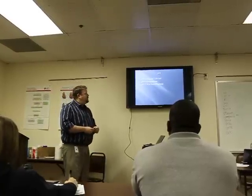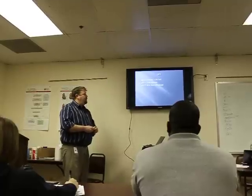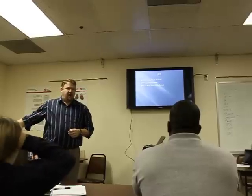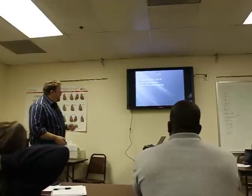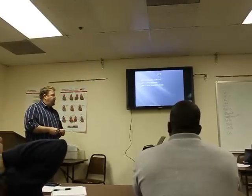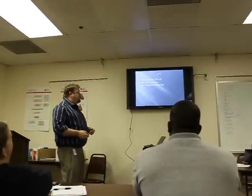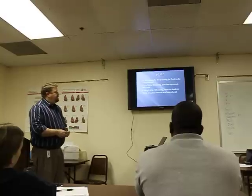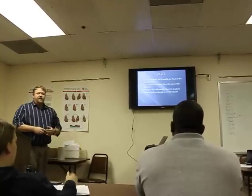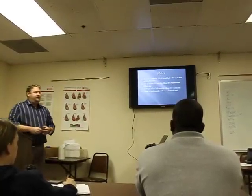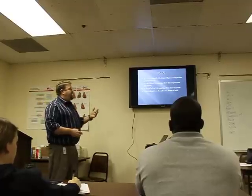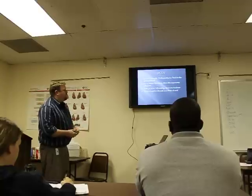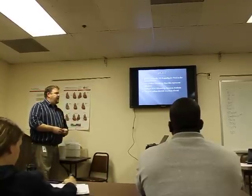With pH, once again it's normally 7.35 to 7.45 — so our body normally sits slightly alkalotic. pH less than 7.35 is acidosis; above 7.45 is alkalosis. PCO2 is normally 35 to 45 millimeters of mercury in arterial blood. If that is below 35, this represents alkalosis; if PCO2 is above 45, then it's acidosis — so it's kind of reversed from the pH.